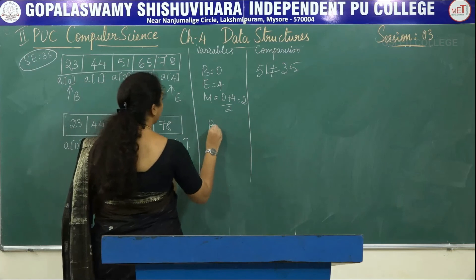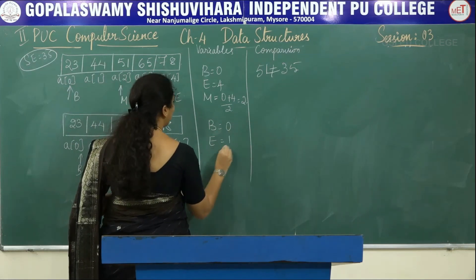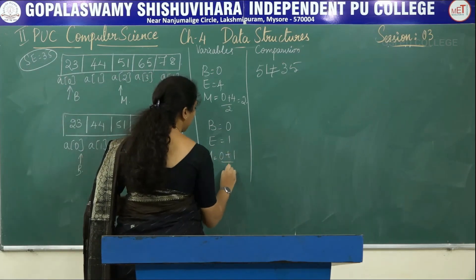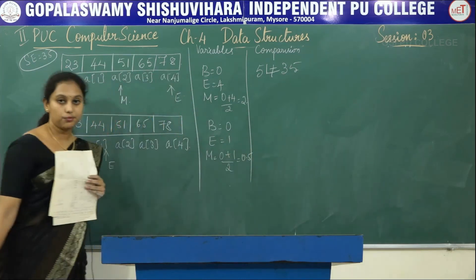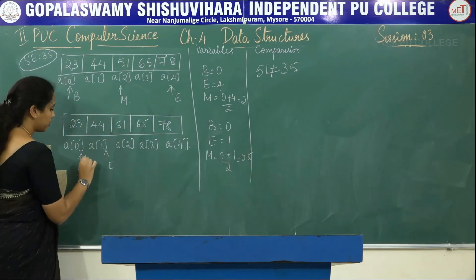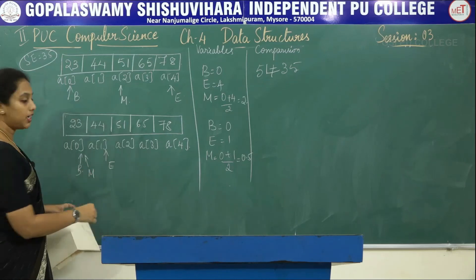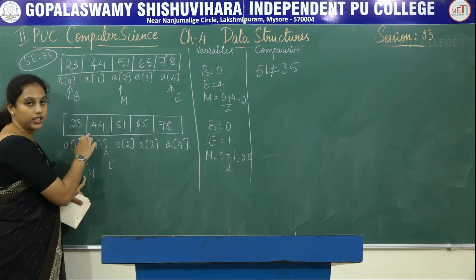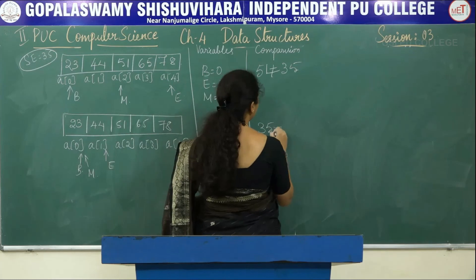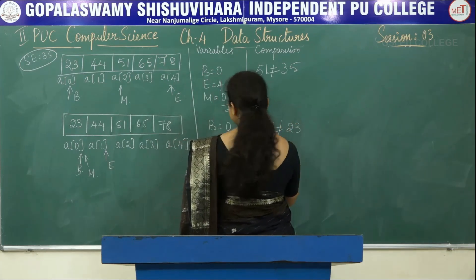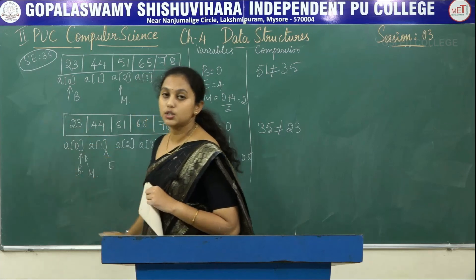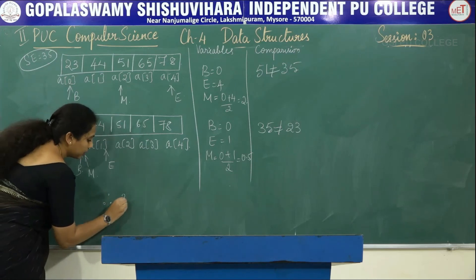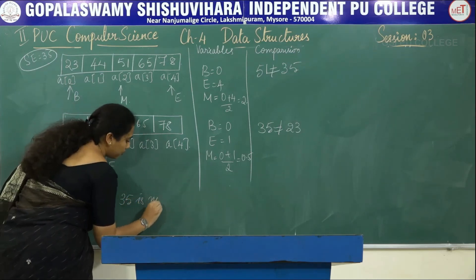With b=0 and e=1, the new middle m = (0+1)/2 = 0.5, so we consider m=0. We compare 35 with a[0] which is 23. 35 does not equal 23. Hence element 35 is not found in the array.